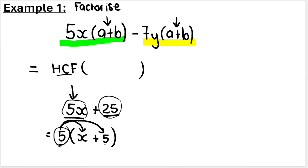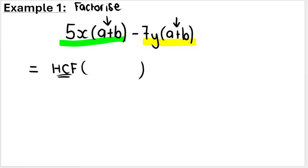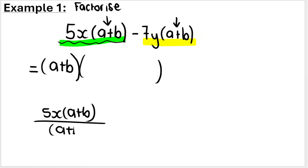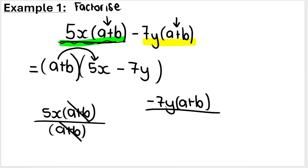But in this case, our highest common factor is a bracket — you can see that the bracket is in common. So our highest common factor is (a plus b). Then we open a leftover bracket. To find what goes inside, you take the first term and divide it by the highest common factor. These brackets cancel, so we're left with 5x. Then what must I multiply (a plus b) by to give me negative 7y(a plus b)? You can see it's negative 7y. That is your answer.